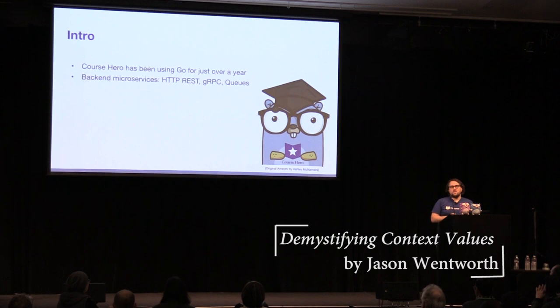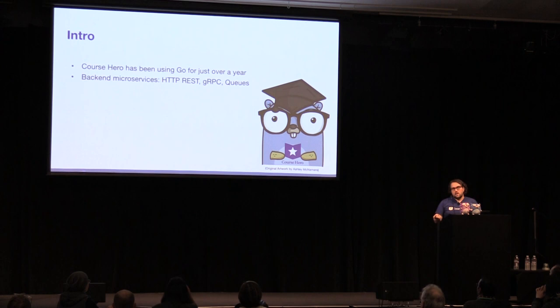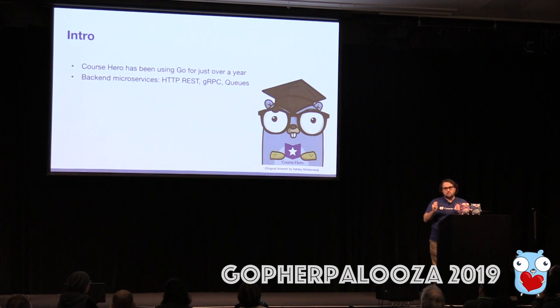A little background on how we've been using Go at Course Hero. We have mostly been using it for just over a year now, using it to build our backend microservices. We're in the process of pulling out from our monolithic application into microservices. About a year ago we transitioned to building those backend microservices in Go. Those are mostly all REST-based HTTP services, and we are transitioning to gRPC right now. We also have things that process from queues and CLI processes — mostly backend processes interacting with the database.